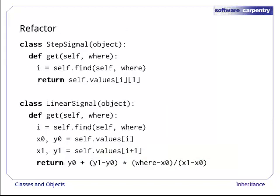What we want to do is refactor this code so that our methods look like this. The new method, find, will either return the index of the sample immediately preceding where, or raise an exception if where is out of range. Once we have that index, we can either return the corresponding y value, if we're doing stepwise interpolation, or find a weighted average, if we're doing linear interpolation.